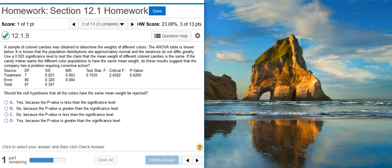A sample of colored candies was obtained to determine the weights of different colors. The ANOVA table is shown below. It is known that the population distributions are approximately normal and the variances do not differ greatly. Use a two and a half percent significance level to test the claim that the mean weight of different colored candies is the same.